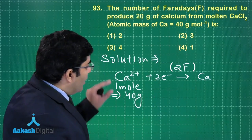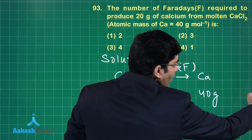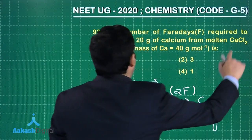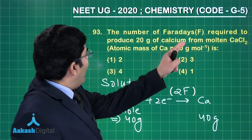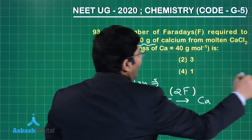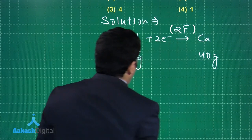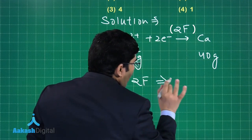But the question is asking number of Faradays required to produce 20 grams of calcium, so we need 20 grams. Two Faradays corresponds to 40 grams of calcium.